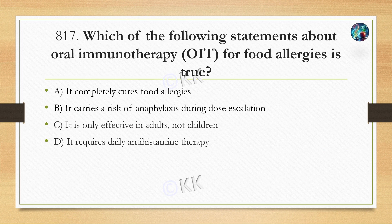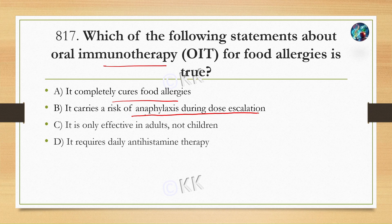Which of the following statements about oral immunotherapy for food allergies is true? Option A: it completely cures food allergies, Option B: it carries a risk of anaphylaxis during dose escalation, Option C: it is only effective in adults, not children, Option D: it requires daily antihistamine therapy. The correct option is Option B.